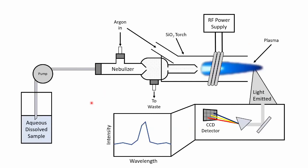Here's how it works: your samples get sucked up with a pump, then put into something called a nebulizer, which turns your sample into an aerosol mixed with argon gas. There is a plasma torch made with an RF power supply and argon gas, and your samples get sent into the plasma, which gives them energy to emit characteristic light. That light is then measured and separated with a prism.